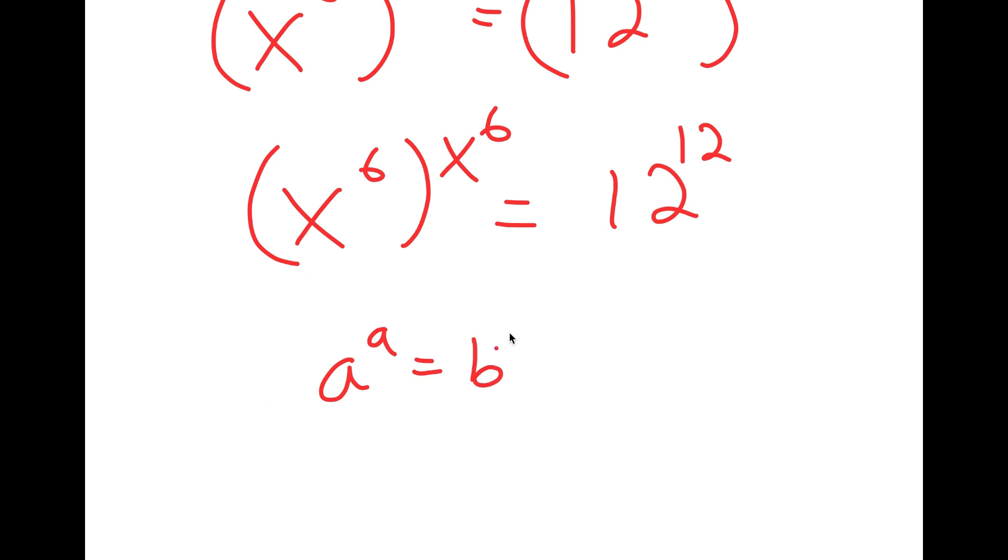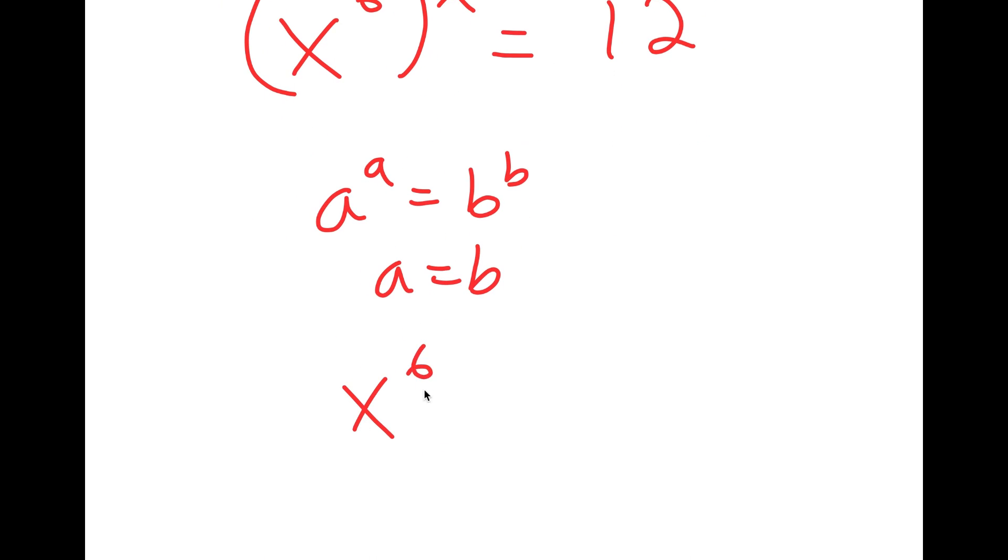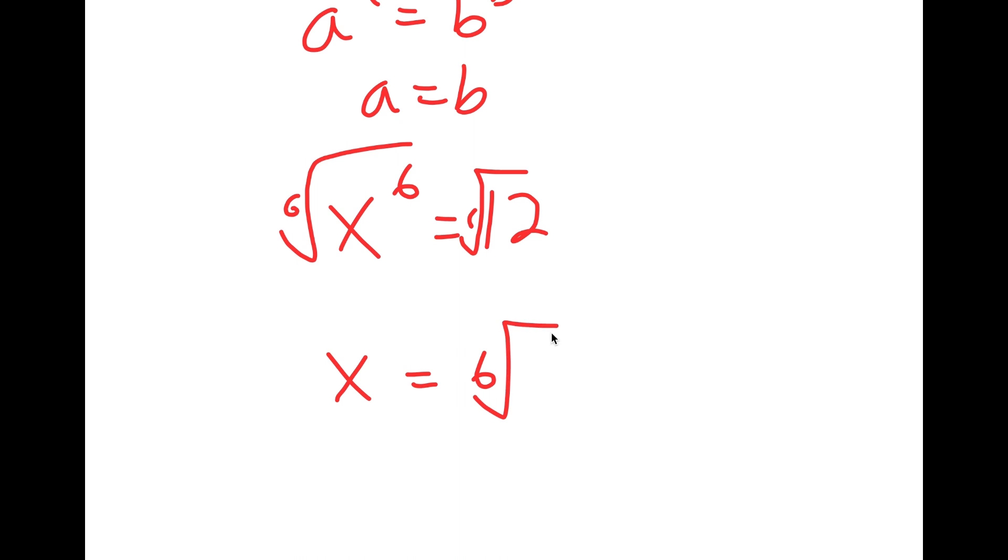And if I have something in the form a to the power of a is equal to b to the power of b, this means that a equals b. So in this case, x to the power of 6 is equal to 12. And if I take the 6th root on both sides, I get x is equal to 6th root of 12.